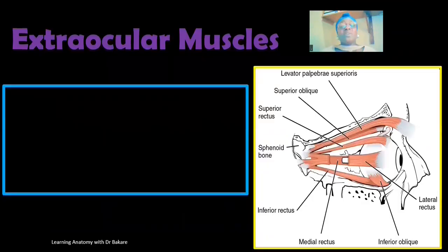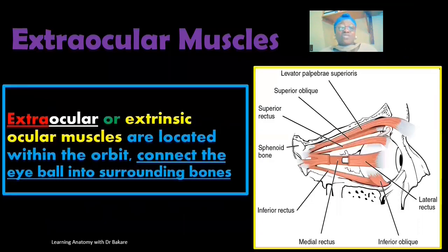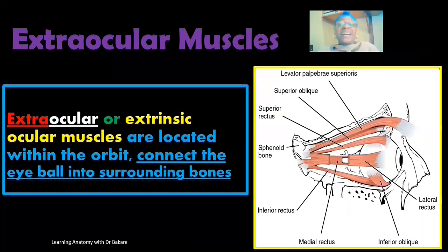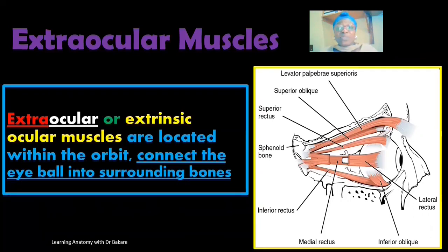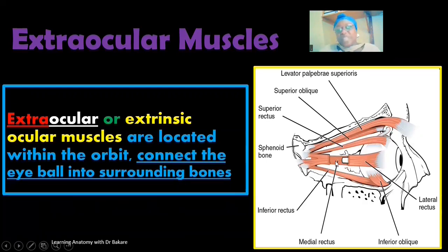The extraocular muscles are also referred to as the extrinsic ocular muscles. They are extrinsic because they are located outside the eyeball. We also have the intraocular muscles that are located within the eyeballs — the ciliary muscle is a very good example of the intraocular muscle. The extraocular muscles are located within the orbit because they connect the eyeballs with the structural components of the bony orbit.